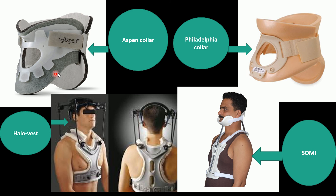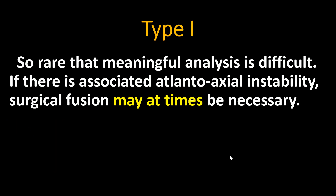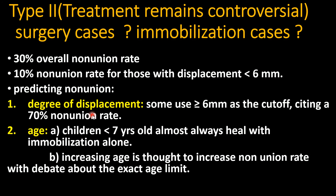Shown here are the rigid collars: Aspen collar, Philadelphia collar, the halo vest, and the SOMI (sternoccipital mandibular immobilization). Type 1 is so rare that meaningful analysis is difficult; if there is associated atlantoaxial instability, surgical fusion may at times be necessary. For Type 2, treatment remains controversial, as the boundary between surgery cases and immobilization cases is not definitive.